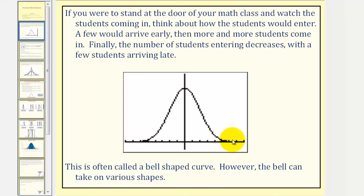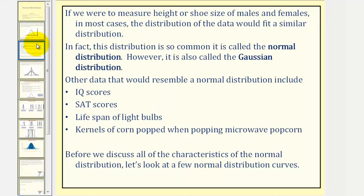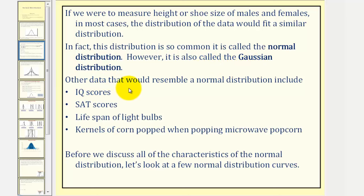Though the bell-shaped curve can take on various shapes. If we were to measure height or shoe size of males and females, in most cases the distribution of the data would fit a similar distribution. In fact, this distribution is so common it is called the normal distribution. However, it is also called the Gaussian distribution. Other data that would resemble a normal distribution include IQ scores, SAT scores, the life span of light bulbs, and one of my favorites: kernels of corn popped when popping microwave popcorn.